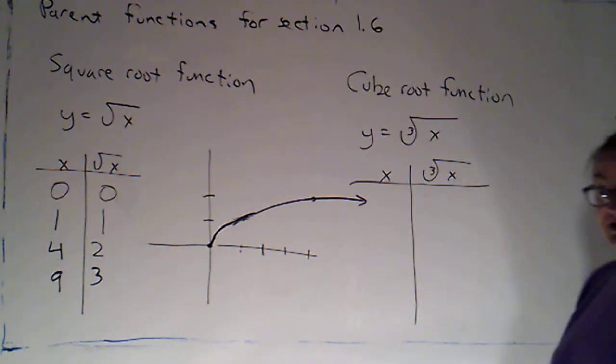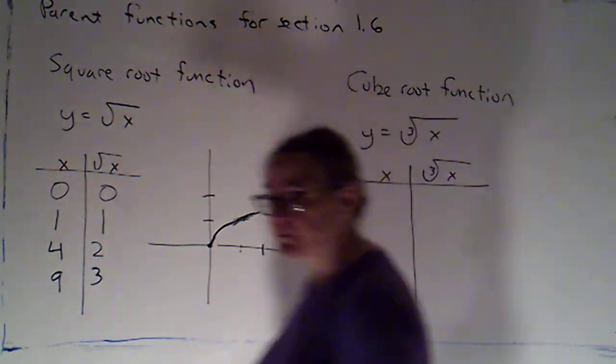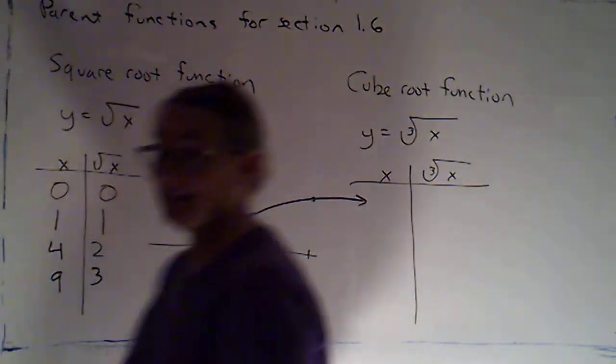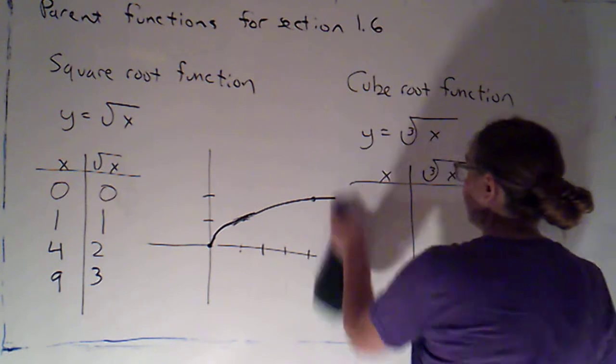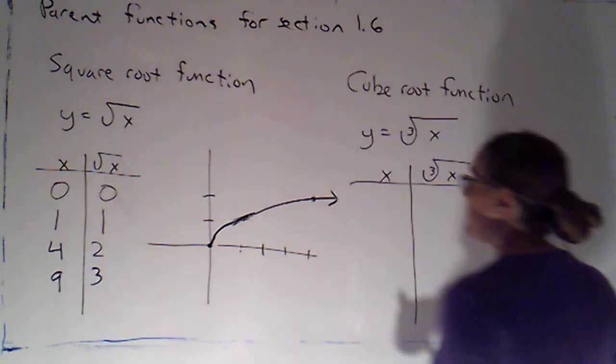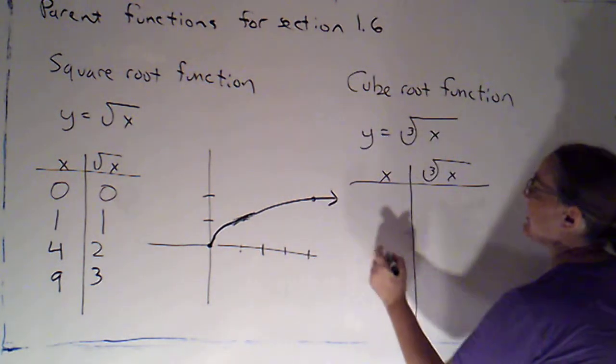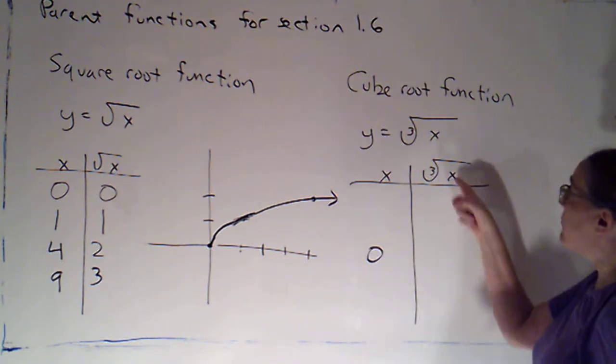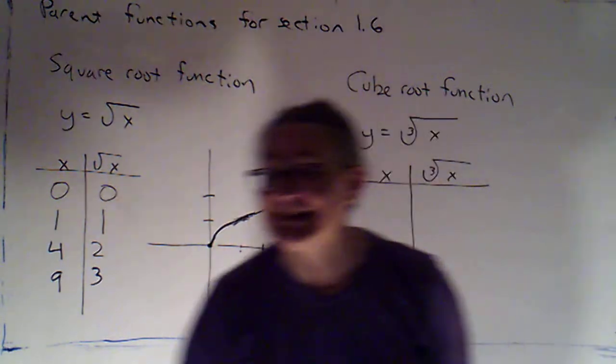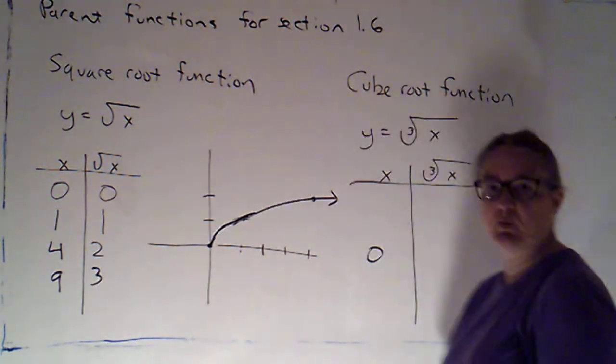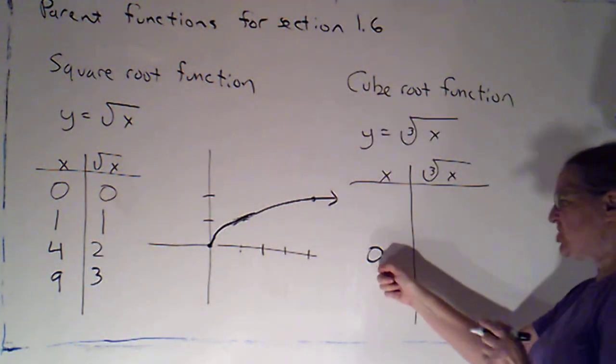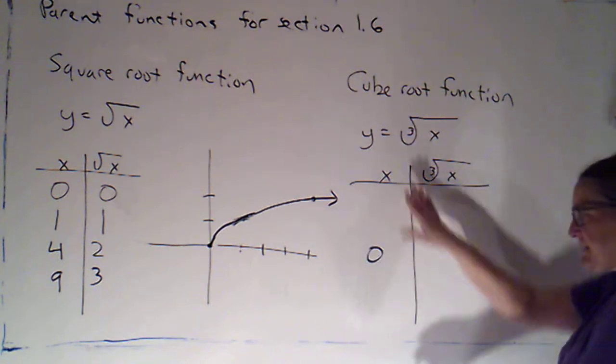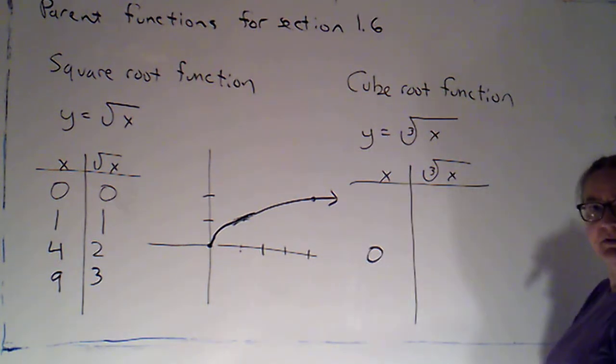Now for the cube root function, since that's an odd root, I can take odd roots of negative numbers. So I am going to go with my pattern of doing a couple of negatives, and then 0, and then a couple of positives. But again, I want to make sure that I'm picking things that it's easy to take the cube root of.